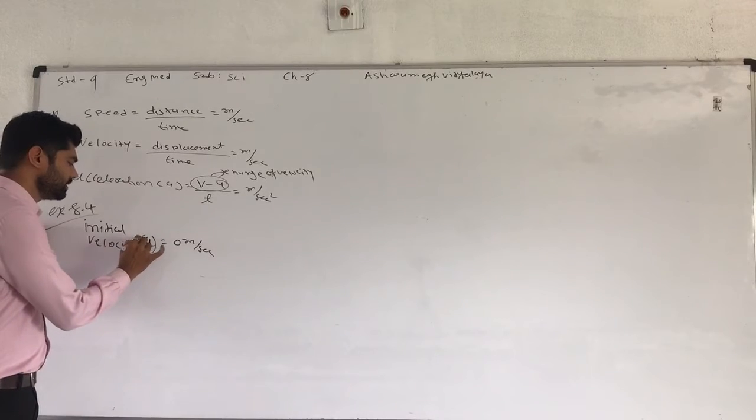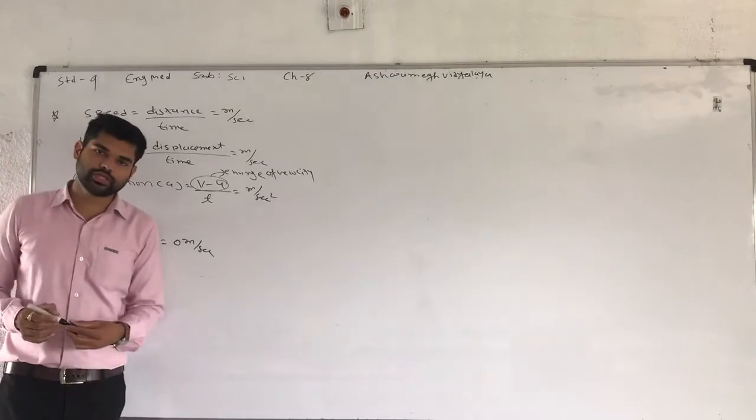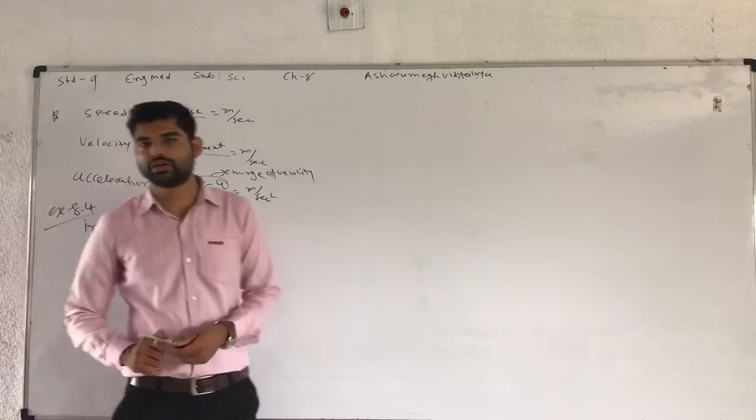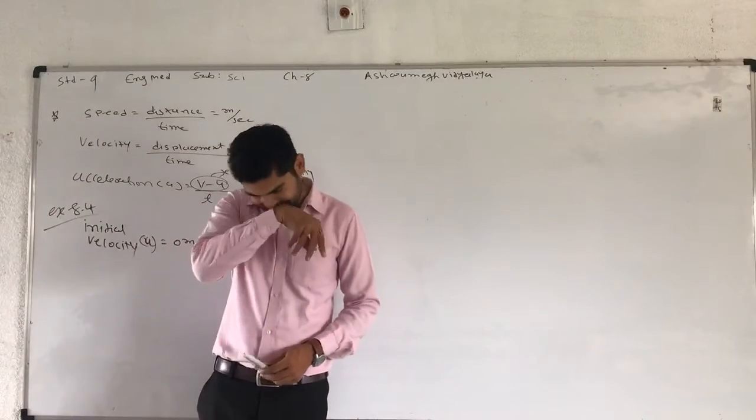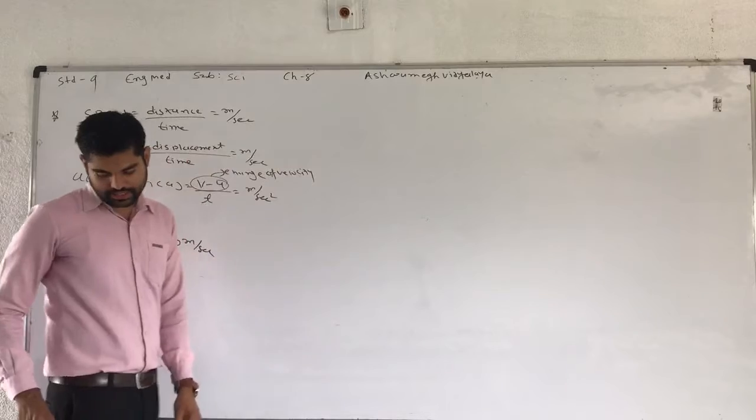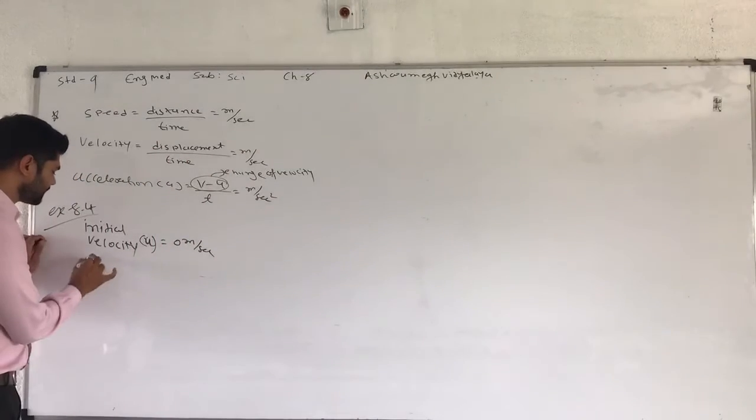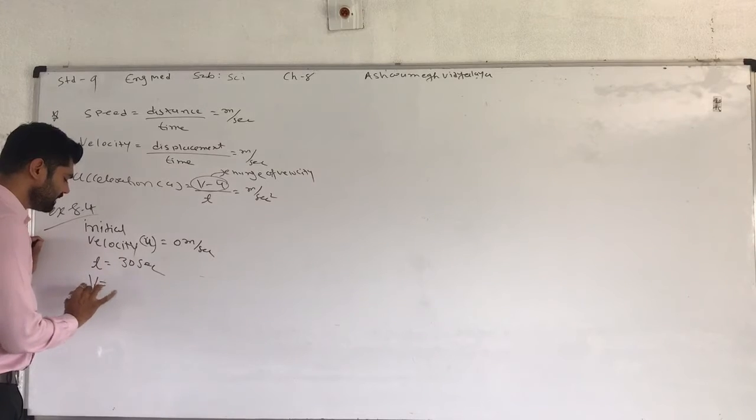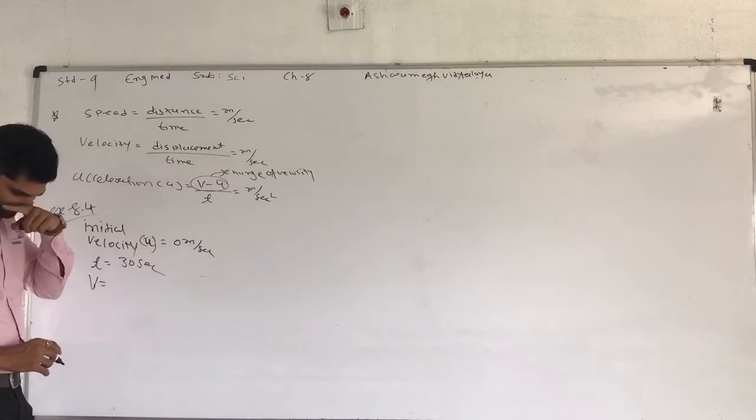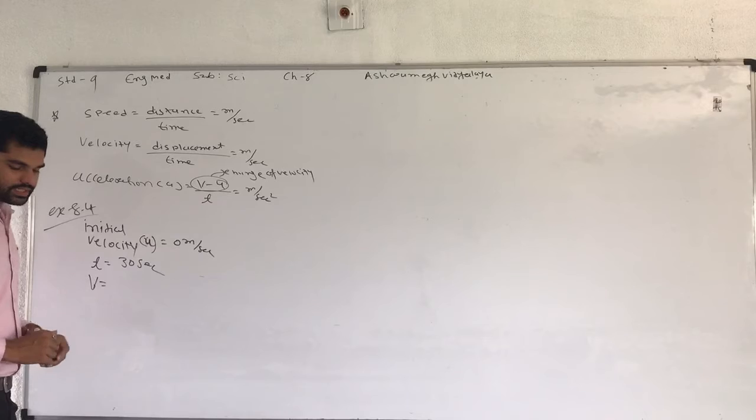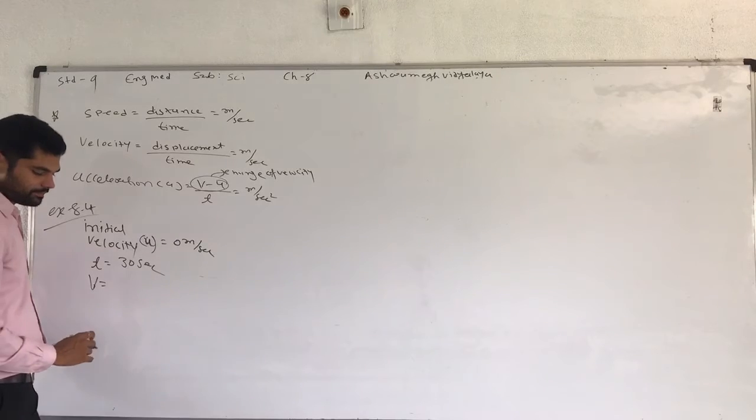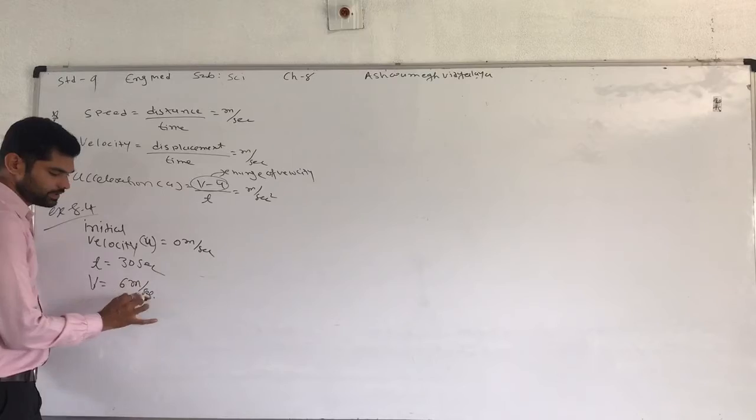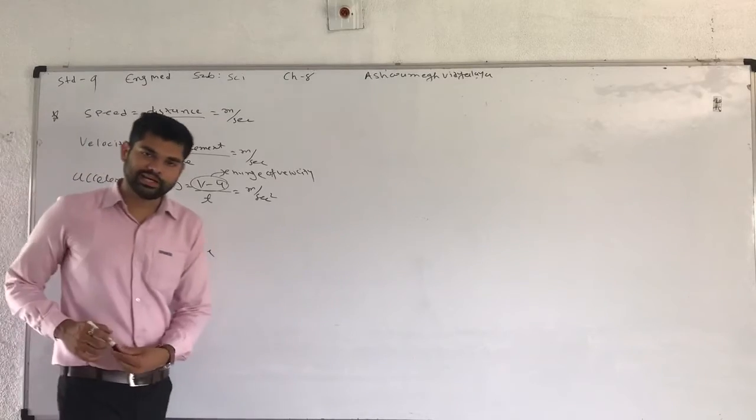Remember that, because he started at rest position, rest position means velocity is 0. Next, time taken 30 seconds. He reached their final velocity, he reached their final velocity at 6 meter per second.